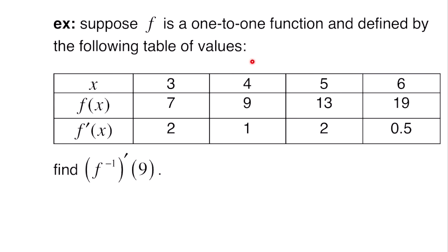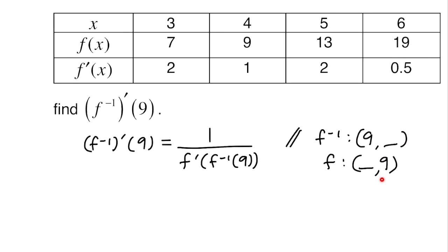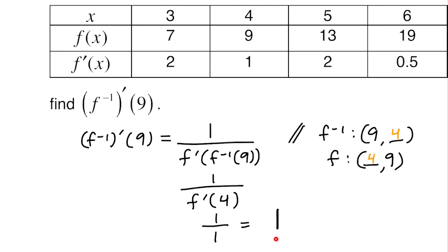This example: suppose f is a one-to-one function defined by a table of values with columns for x, f of x, and f prime of x. We want to find the derivative of f inverse at nine. Using the formula, it's one over f prime of f inverse of nine. Since f inverse has nine as the x coordinate, for f we need the x value where f of x equals nine. Looking at the table, f of x equals nine when x equals four. So f inverse of nine equals four. Then f prime of four equals one, giving a final answer of one.